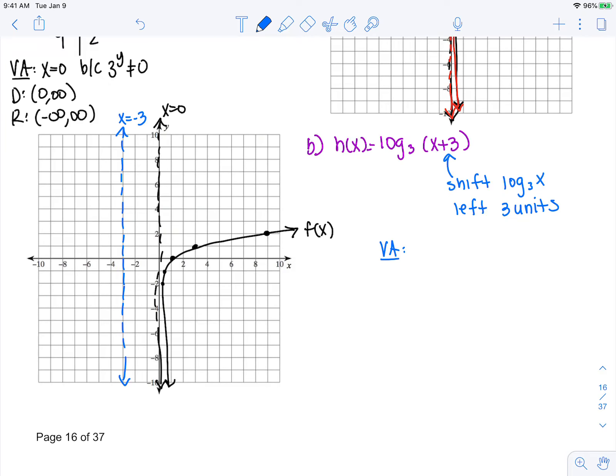x = -3. And then everything else is going to be shifted left 3 units. Those last two are pretty good. So this is now h(x).